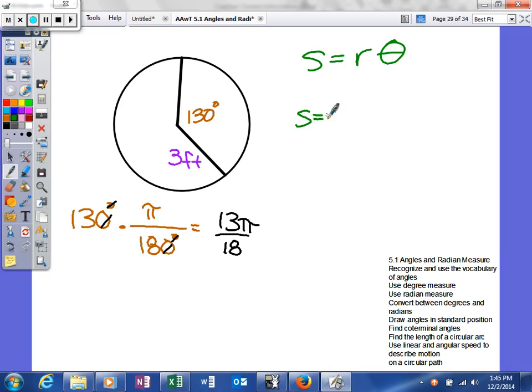So this time we're looking for our arc length, the length along the outside of the circle that's represented by this scenario. So we're going to take our radius of 3 feet and multiply it by our value, our angle.